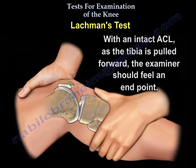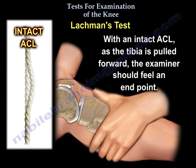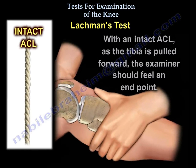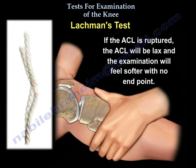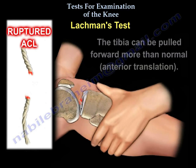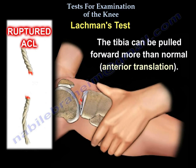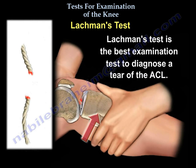With an intact ACL, as the tibia is pulled forward, the examiner should feel a firm end point. If the ACL is ruptured, it will be lax and the examination will feel softer with no end point — the tibia can be pulled forward more than normal, which is called anterior translation. The Lachman test is the best examination test to diagnose a tear of the ACL.